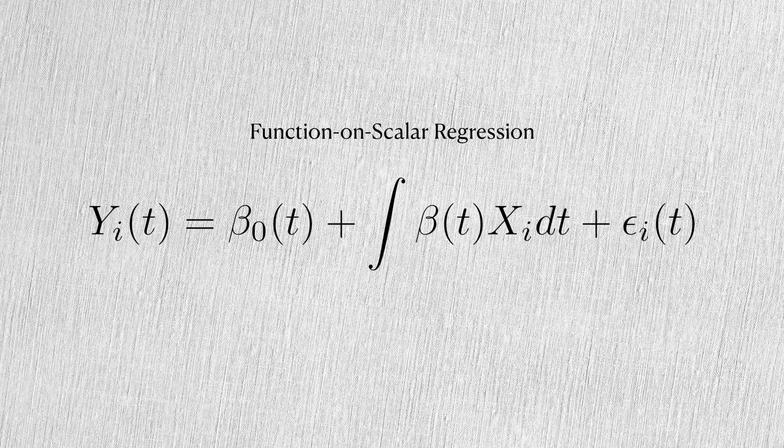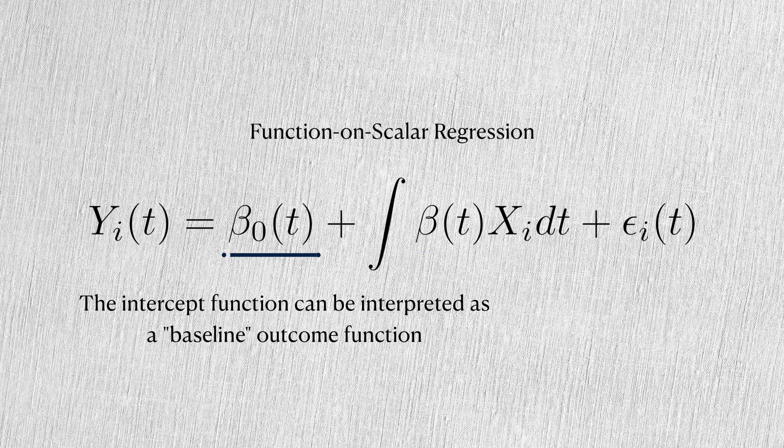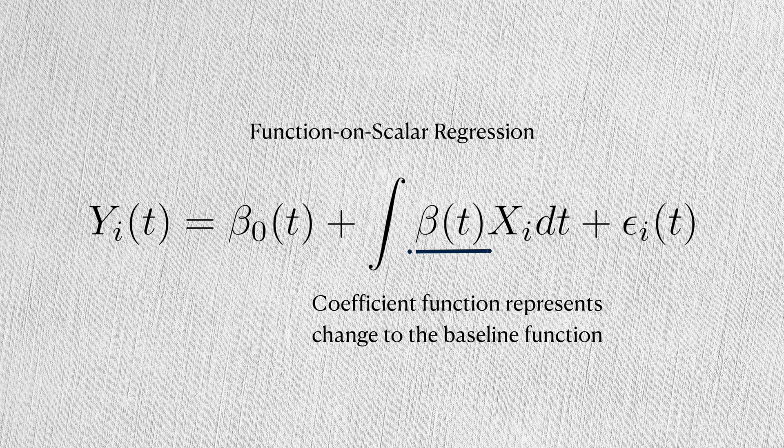Function-on-scalar regression takes this form, and we can see that the form of the model changes to fit the form of the outcome. Both the intercept and the error are now functions themselves. Similar to scalar-on-function regression, we're interested in estimating and examining this coefficient function. We can think of this intercept function as a kind of baseline, since it's what's left when the covariate equals zero. When the covariate changes value, this coefficient function represents changes to the baseline function.